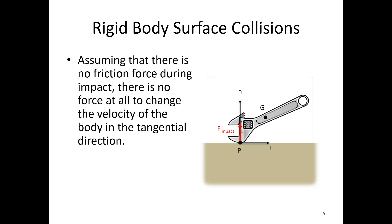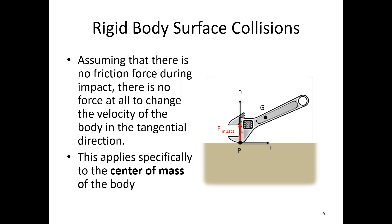First of all, assuming there's no friction force during the impact, there's going to be no force to change the velocity in the tangential direction. If there is no force, there's no impulse; if there's no impulse, there's no change in momentum. Assuming the mass of the wrench stays the same, the velocity will remain the same. The velocity of center of mass G in the tangential direction final equals the tangential velocity of G initial.